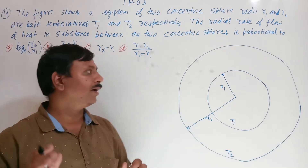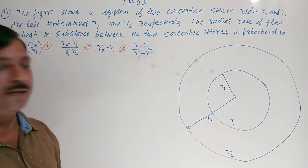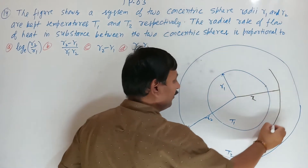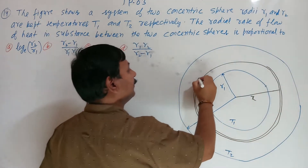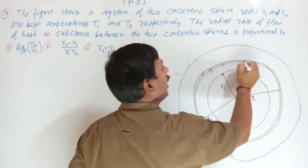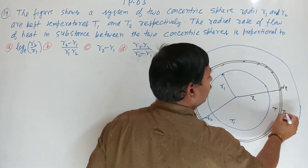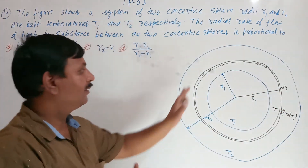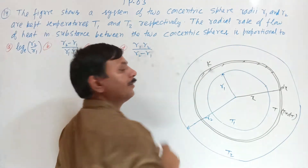Suppose at distance X, I have taken one element of radius X and width DX. The inner temperature of that element is T and the outer temperature is T plus DT. At distance X, K is the thermal conductivity of the substance between the two spheres of radii R1 and R2.